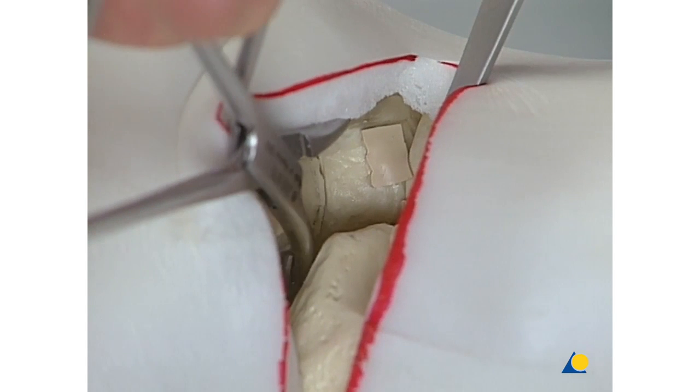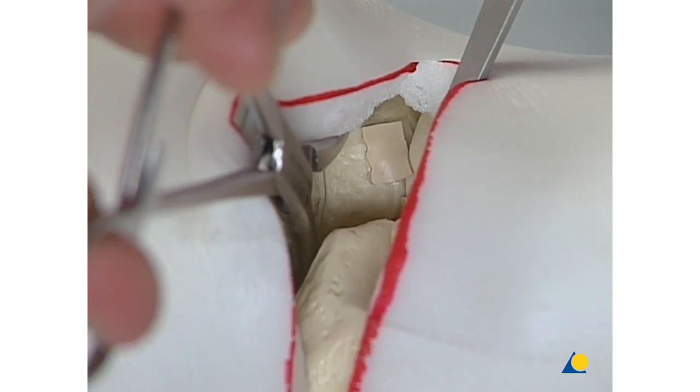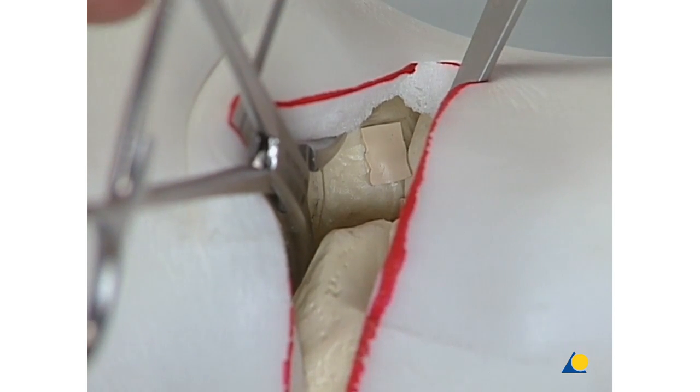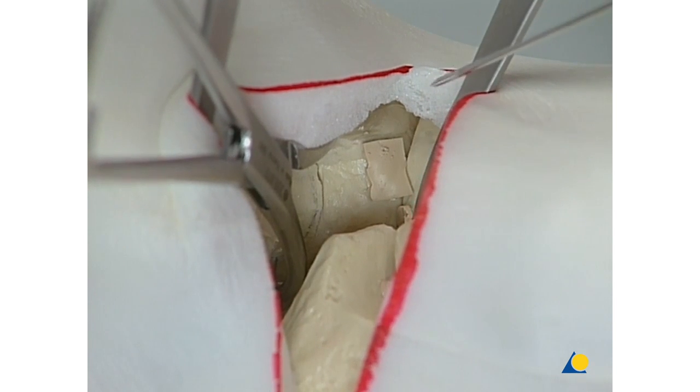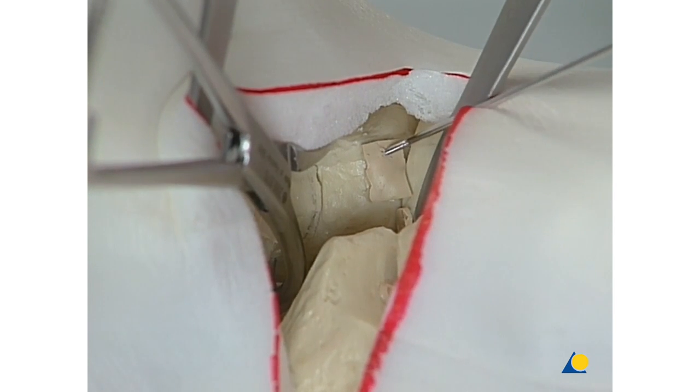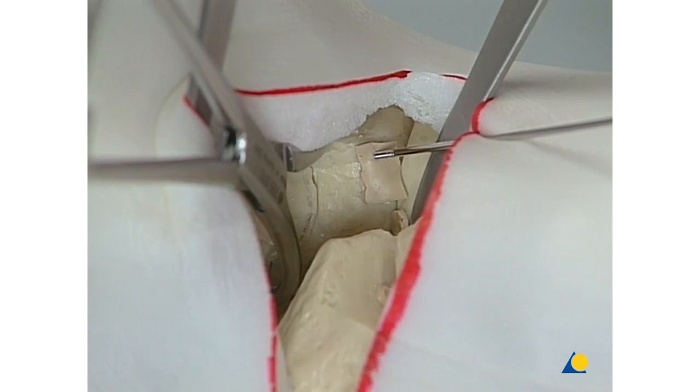Reduce the lateral aspect of the fracture using the small reduction forceps. Transfixion of the fracture using a threaded 1.6mm K wire.